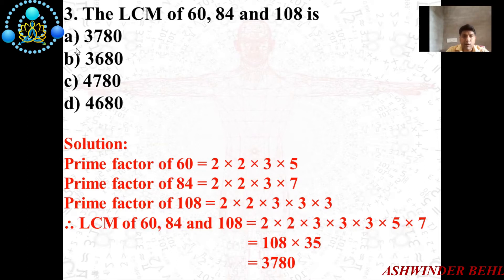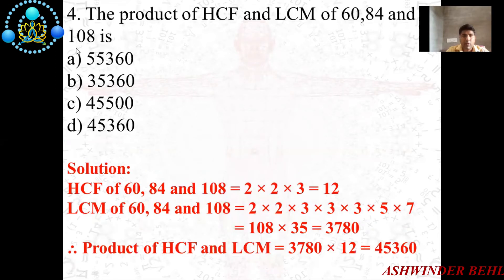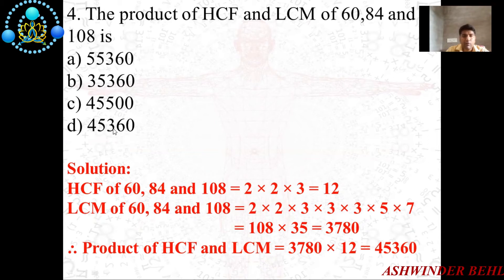So 3780 is the correct answer. Now the fourth question: The product of the highest common factor and the least common multiple of 60, 84, and 108 is? The four options are 55,360; 60,035; 35,360; 45,500; and 45,360.